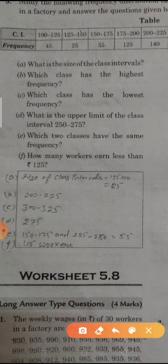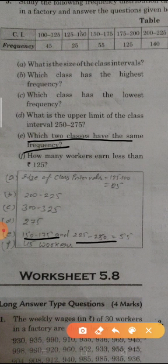Now E: these two classes have the same frequency. 150 to 175 and 225 to 250, both have 55 frequency, means 55 workers.